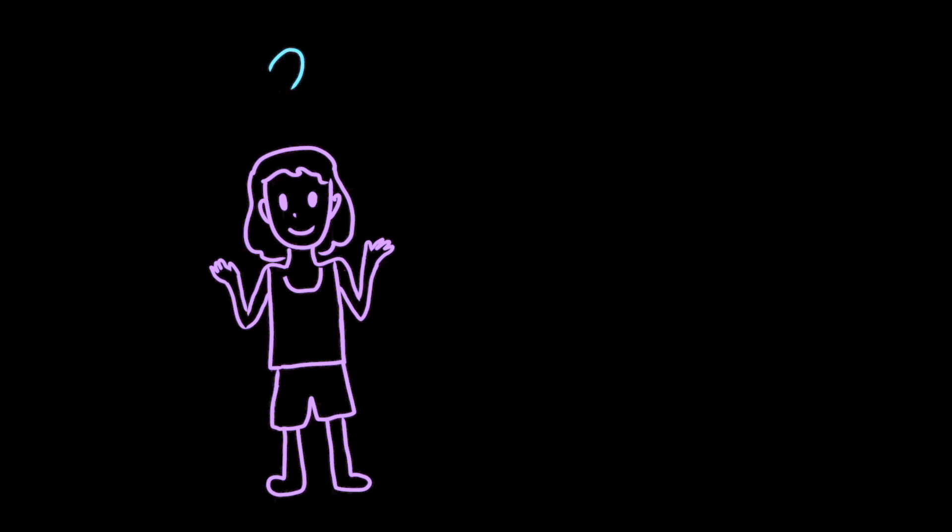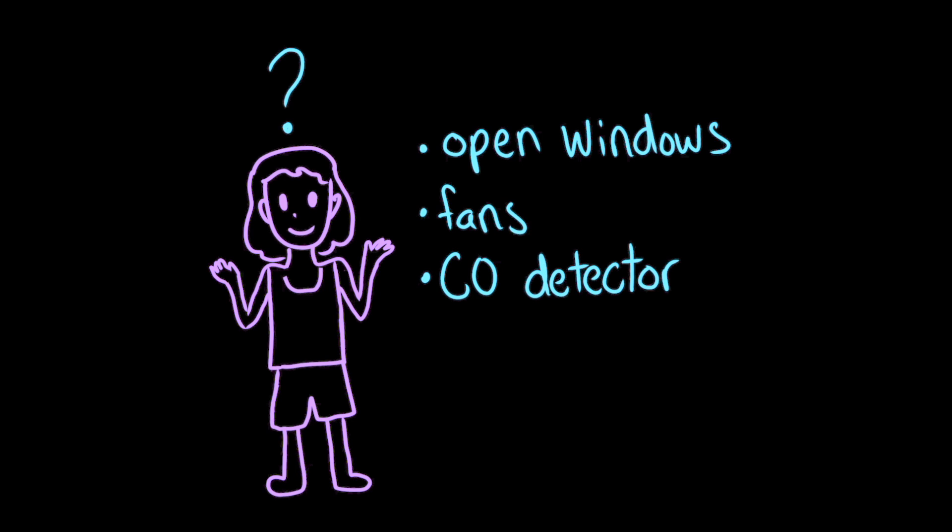So, what could Ava do to reduce combustion-related air pollution? Well, she could open the windows, and she could use fans to mix the smoke and pollution with outside air. Ava should also install a carbon monoxide detector to make sure that the air is safe. A carbon monoxide detector could also detect leaks from natural gas stoves or heaters.